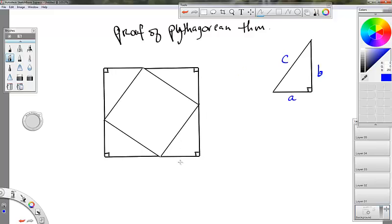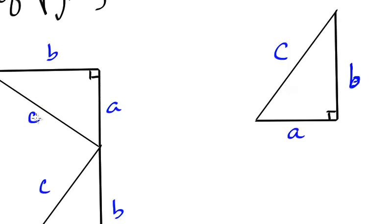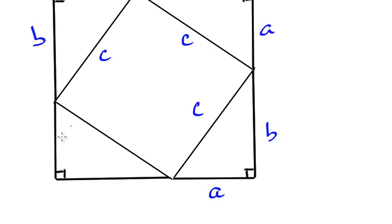But let me go ahead and label all this. This would be A, B, C, A, B, C, A, B, C. So the short side will be A, B, C. So I've got everything labeled now.